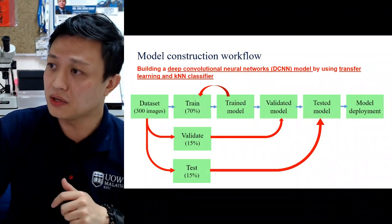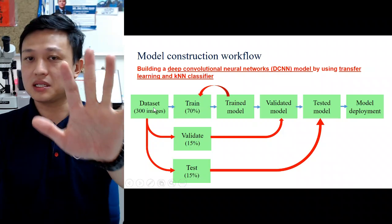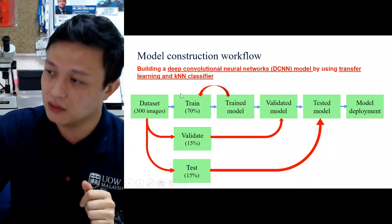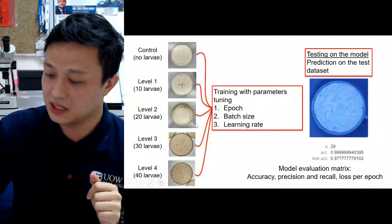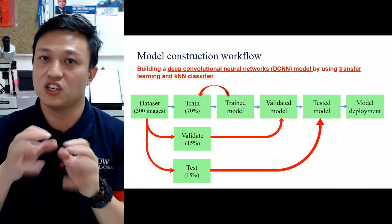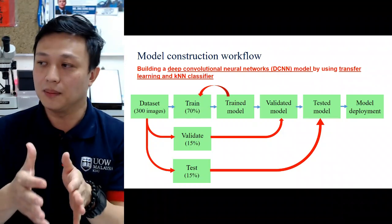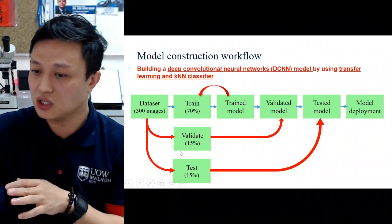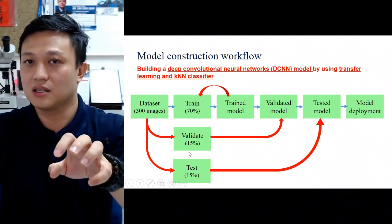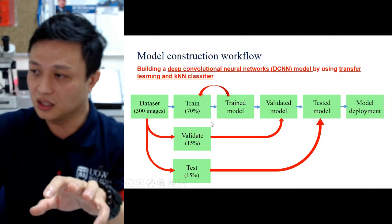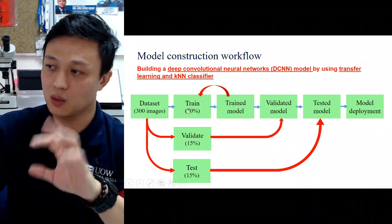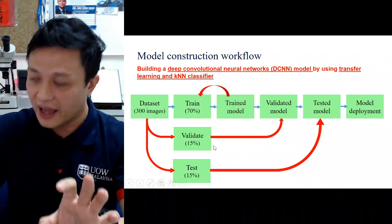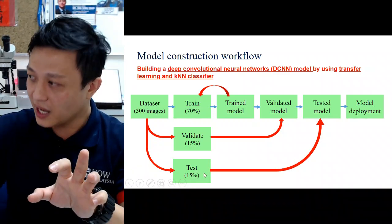For model construction, we have five levels: control, level one, two, three, and four. For each level, we capture 60 images, then split them into three portions — 70% training, 15% validation, and 15% testing. The training portion is used to teach the model what each level looks like. Validation occurs after training to confirm the model correctly identifies each level, and importantly, training images are not reused in validation.